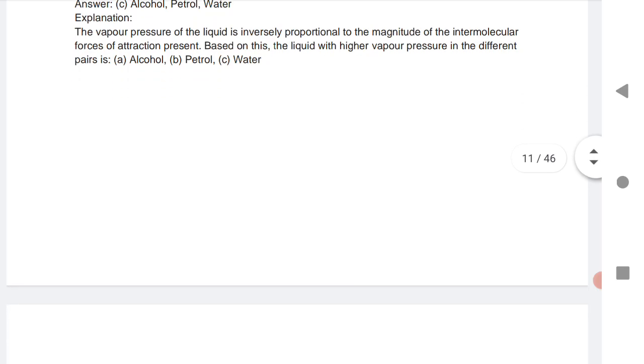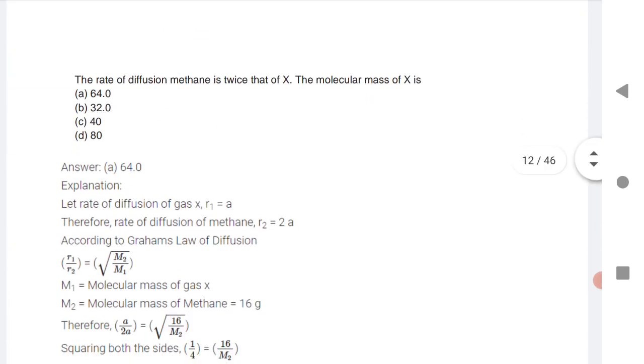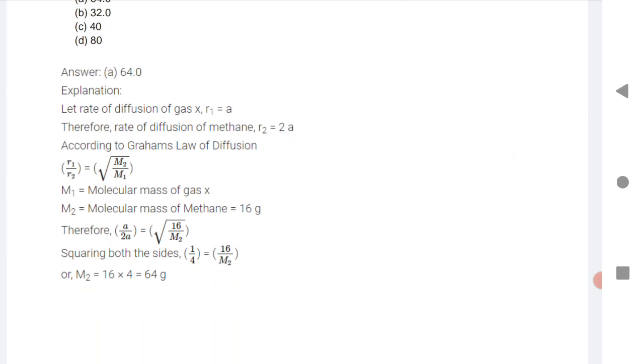Next question is Question 3: The rate of diffusion of methane is twice that of X. The molecular mass of X is? You know the rate is inversely proportional to 1 by square root of molar mass. That is according to Graham's law: r1/r2 = √(M2/M1).